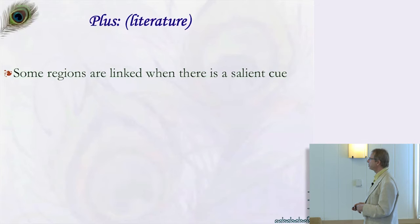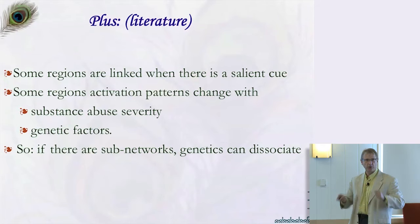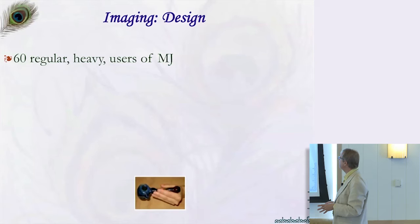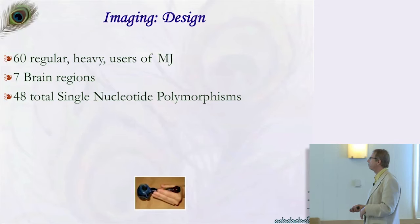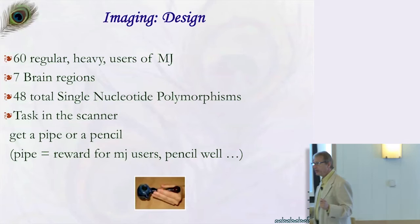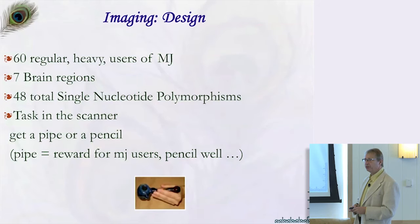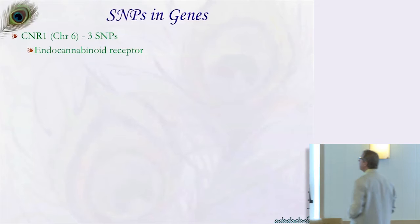The design uses only regular marijuana users, seven brain regions, and 48 SNP genetic markers. In the scanner, participants either hold a pipe or a pencil. Subtracting the pencil condition from the pipe condition reveals the network addiction is triggering. The SNPs come from a small set of candidate genes: the cannabinoid receptor, its antagonist, the dopamine system — because there is no pleasure without dopamine — BDNF linked to brain development and cognitive function, and a gene linked to food pleasure.